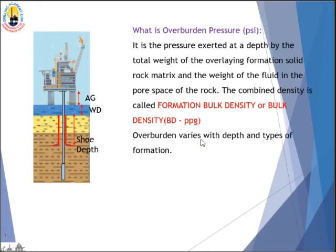The first question is: what is overburden pressure? The unit is psi. The definition is it is the pressure exerted at a depth by the total weight of the overlying formation — the solid rock matrix and the weight of the fluid contained in the pore space of the rock. The combined density is called formation bulk density, or bulk density, measured in ppg. Remember, overburden varies with depth and types of formation.